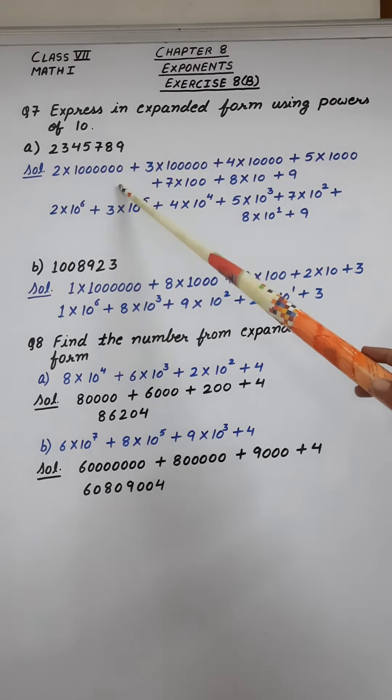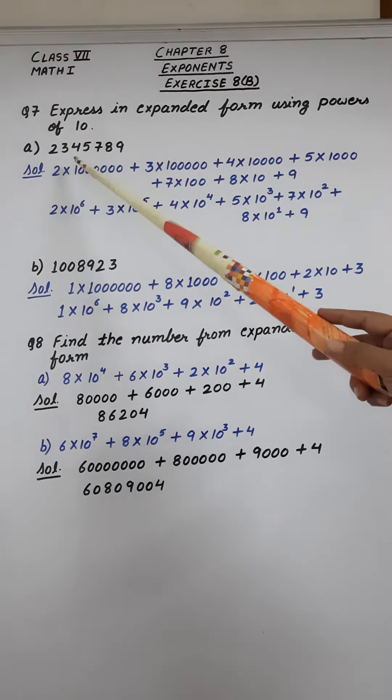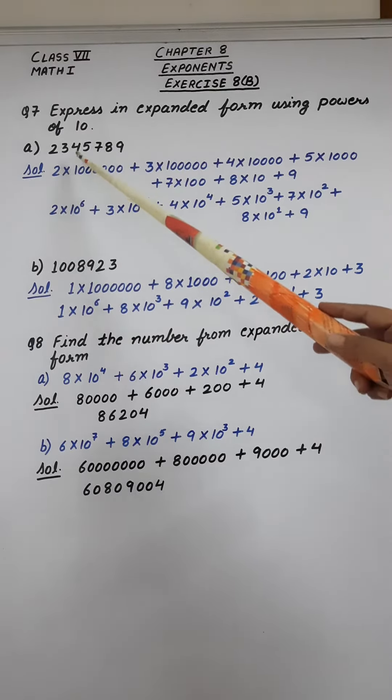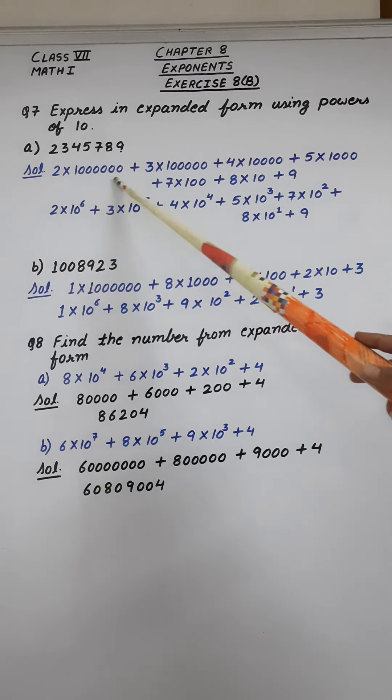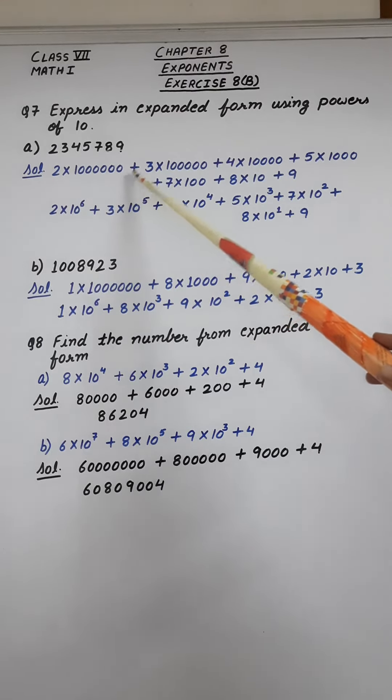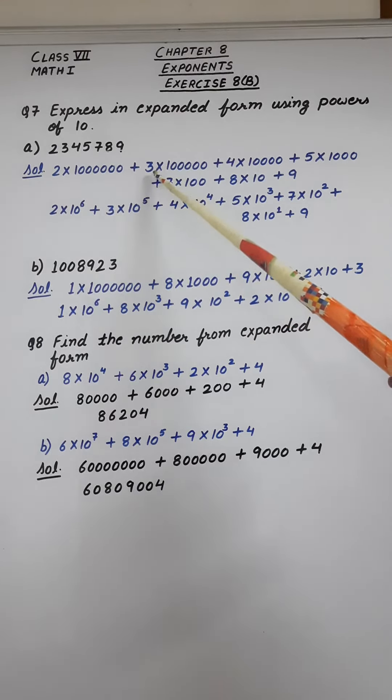So what we have to do here? First thing is, we have to count how many digits are there after 2. So 2, then after that: 1, 2, 3, 4, 5, 6. Six digits are there, that's why we will write it like this: 1 and then after that 6 zeros plus 3.